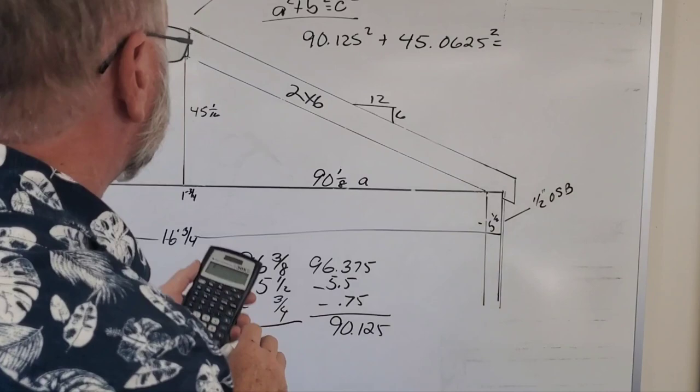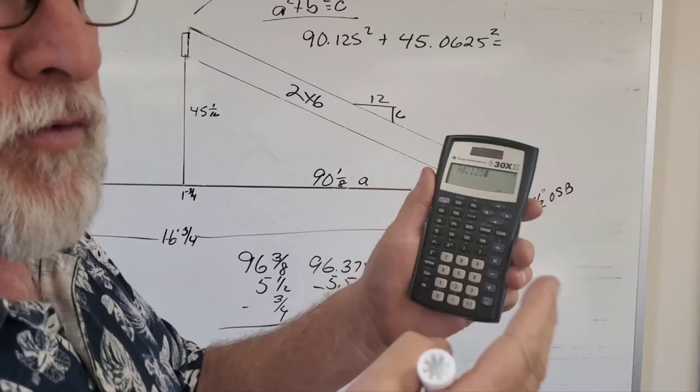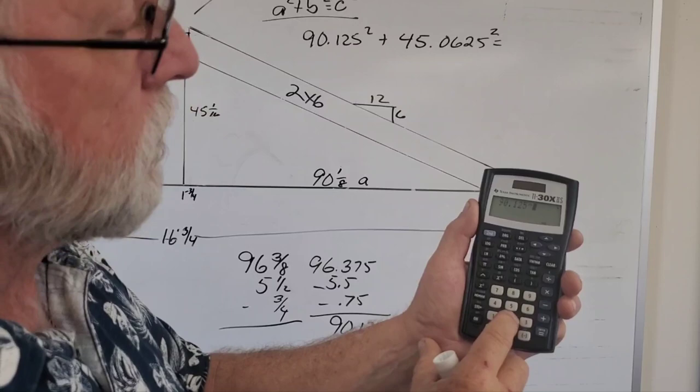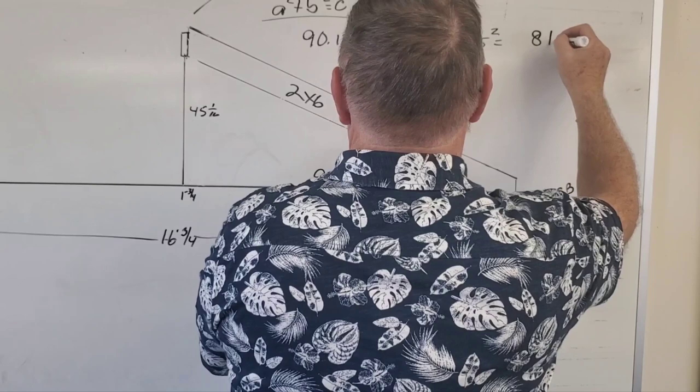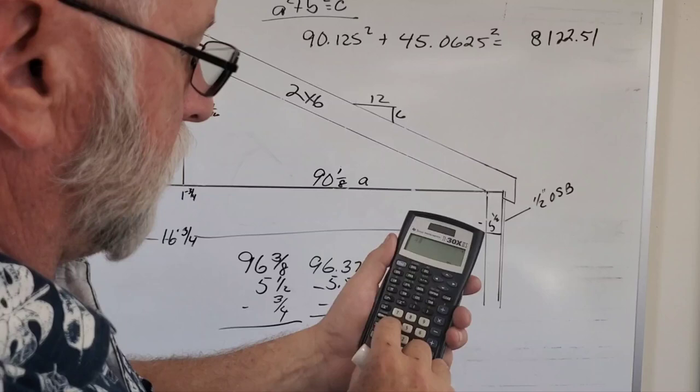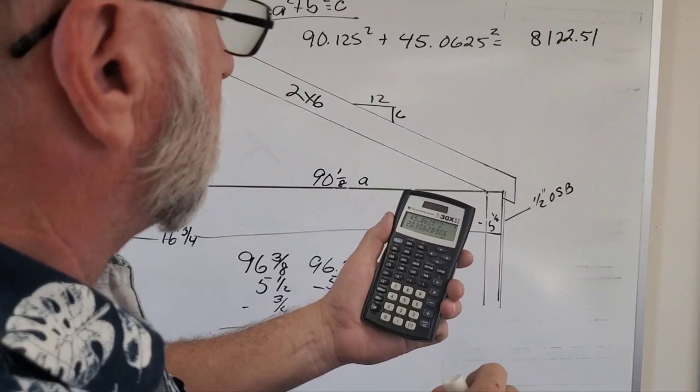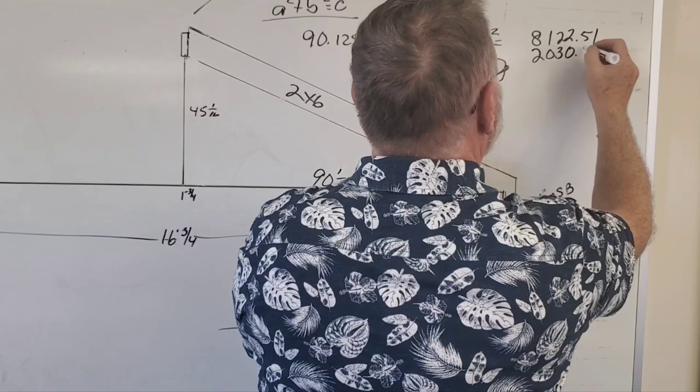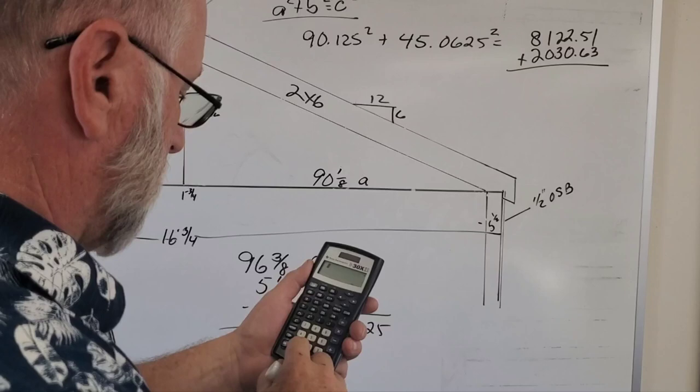Now that's got to be squared. So 90.125 squared - you push this thing called a caret and squared - equals 8,122.51. Then we're going to take the next measurement, 45.0625 squared, equals 2,030.63. So we add those together.